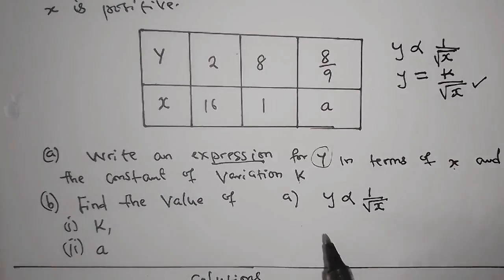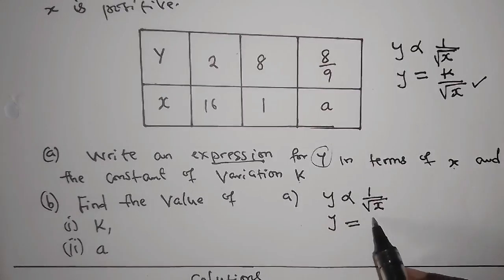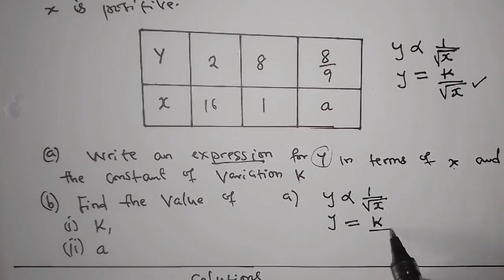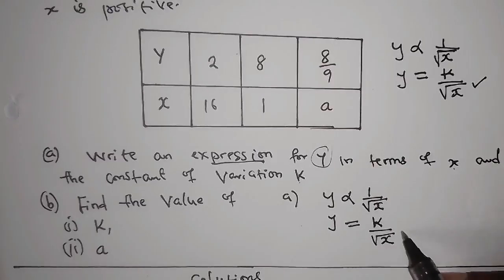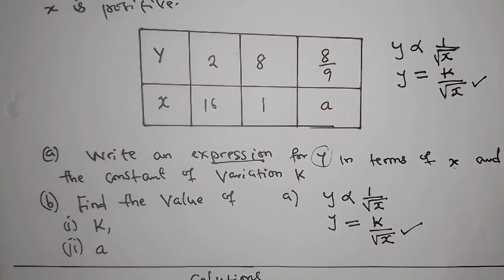So I'm just going to say y varies as 1 over the square root of x. Now, once you do that, introduce the constant: y is equal to k over the root of x. And this is the answer that they wanted you to write. And you have answered question A.